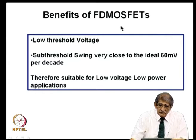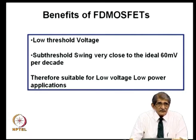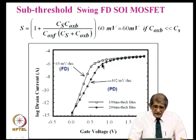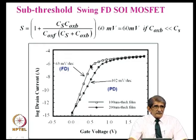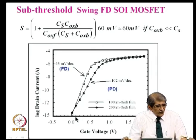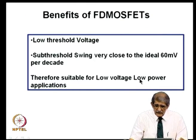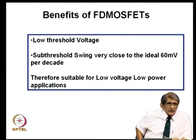Benefits of fully depleted SOI MOSFETs: low threshold voltage, and sub-threshold swing very close to the ideal 60 millivolts per decade. If the threshold voltage is lower, it enables lower supply voltages, and if sub-threshold swing is ideal, it can quickly be turned off. So the SOI MOSFET can be used very effectively for low voltage and low power applications.